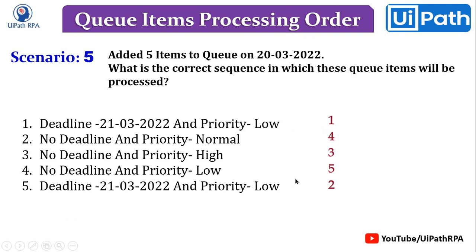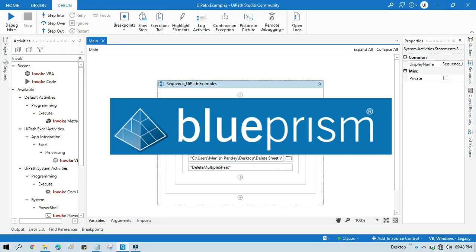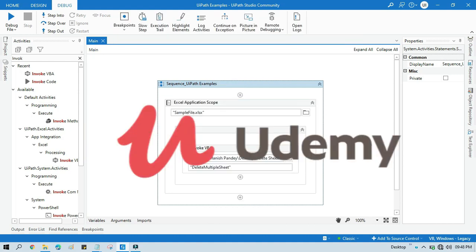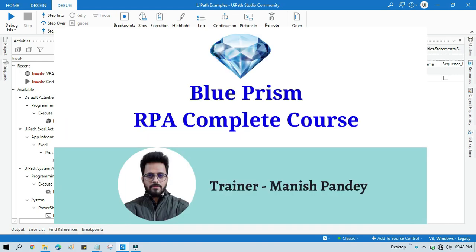This is the correct sequence in which queue items are processed. I've shown you practically with five scenarios — covering deadline with priority, no deadline with priority, same deadline with same priority using FIFO, and no deadline with same priority using FIFO. I hope this concept is clear. Please like this video and subscribe if you are new. Thank you for watching. You can also find my Blue Prism RPA complete course on my YouTube channel or on Udemy.